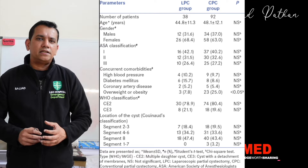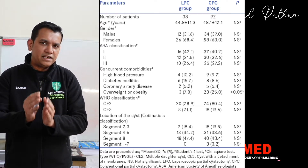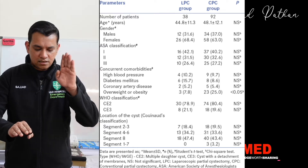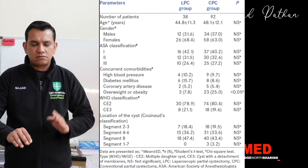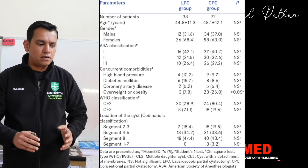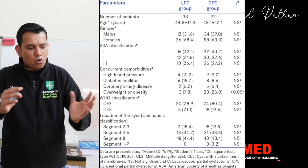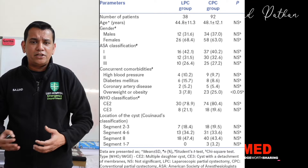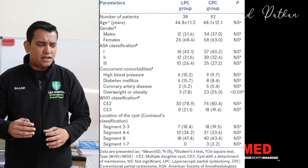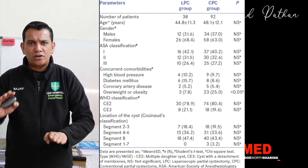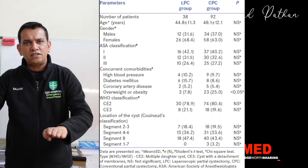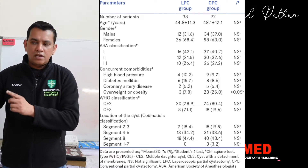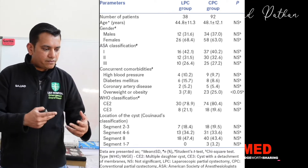A demographic data table is the first table always given in a trial — it puts up the two groups and compares age, sex, race, ethnicity, hypertension, diabetes, medications, etc. A table cannot account for all confounding variables. The numbers themselves are not important — 45 in each group versus 10 in one and 20 in another doesn't matter. What is important is the p-value in the third column.